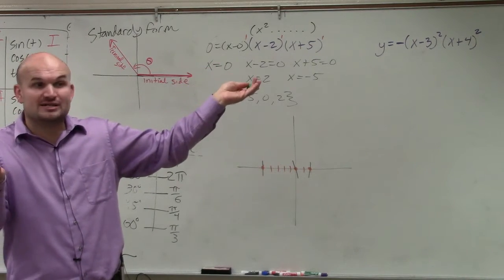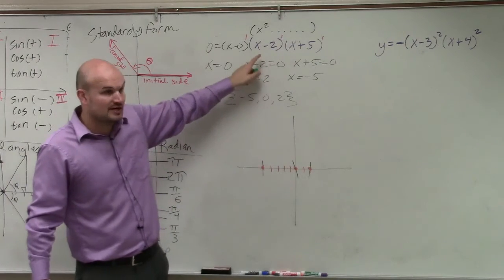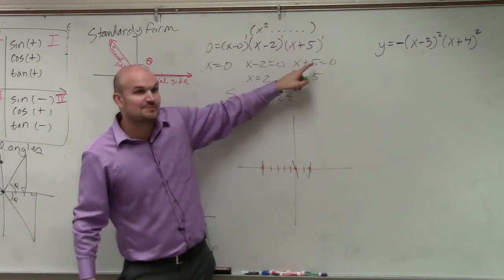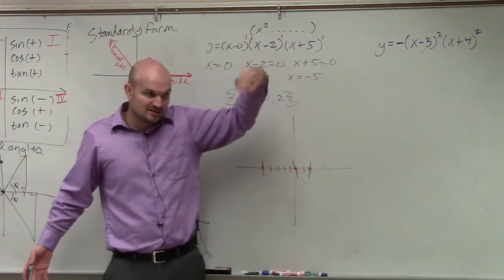I know that the highest power that product would be would be 2. And x times x would give you x squared. There's not going to be a term that's going to give you something higher than that. Would you guys agree? You can't do x minus 2 times x plus 5 and you're going to get like x to the fifth, right? The highest it will be would be x squared. And then everything else is below.